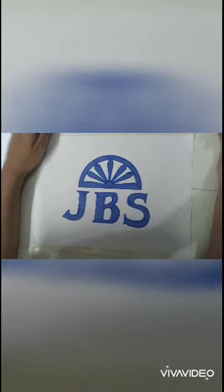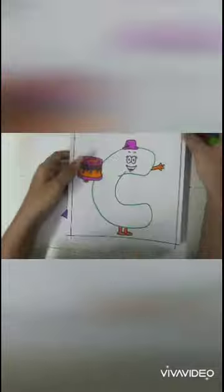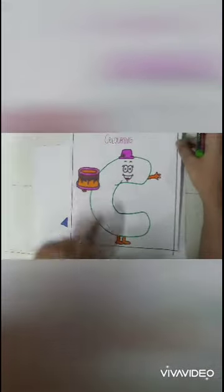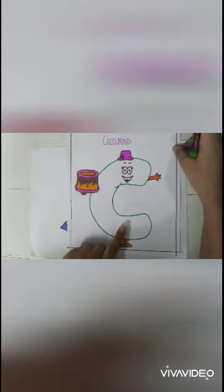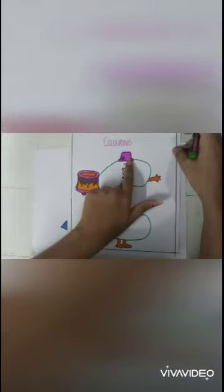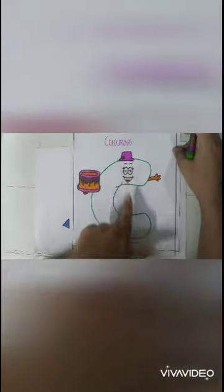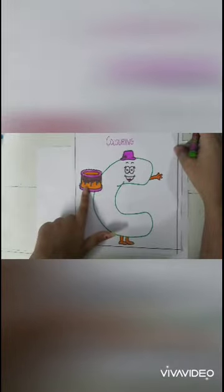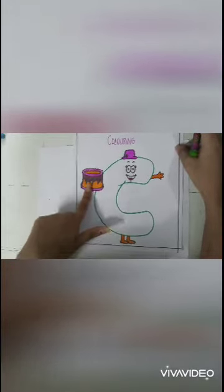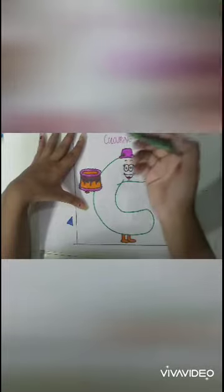You have to do two worksheets. I will show you the other one. First tell me, what is this? This is C. C — cap. What is this? This is a cap. And C — cake. What is this? This is a cake.